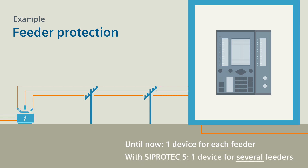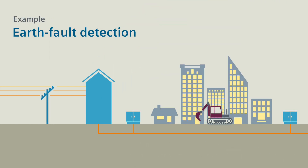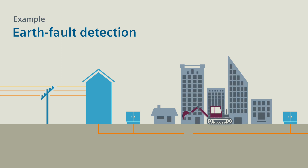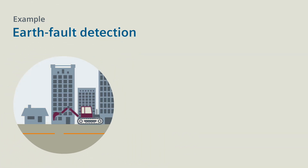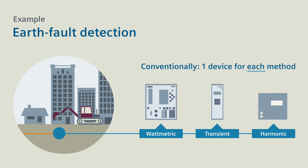one single device is sufficient to simultaneously protect several feeders. Example: Earth Fault Detection. 80% of all faults are earth faults, caused by construction among other things. Solved conventionally, you utilize an independent device for each of the three detection methods: wattmetric, transient, or harmonic.